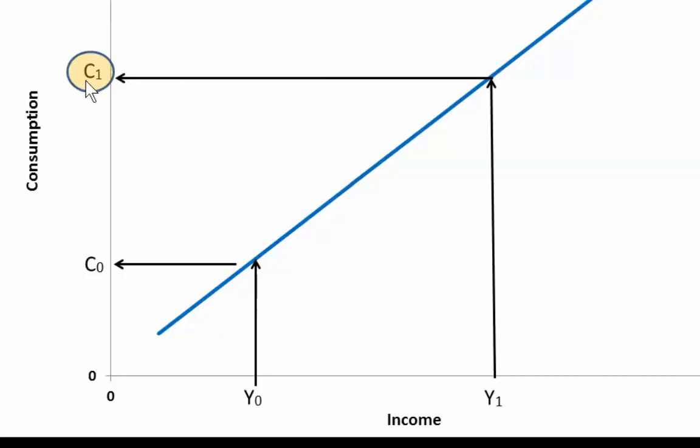Why is that a bigger consumption c1? Because c1 is higher up on the vertical axis than c0. So we can summarize a bigger income y1 leads to a bigger consumption. In this case it's labeled c1.